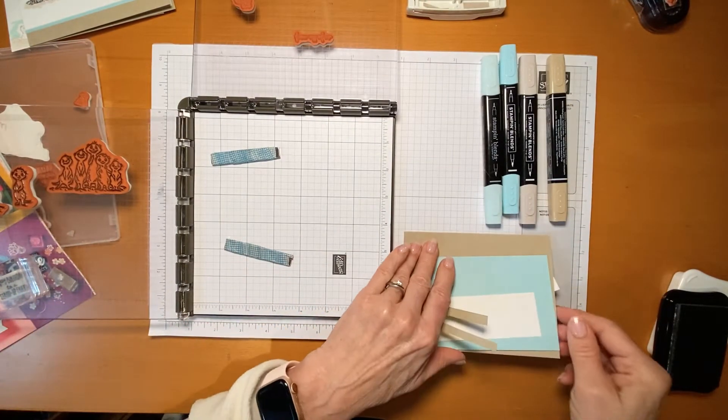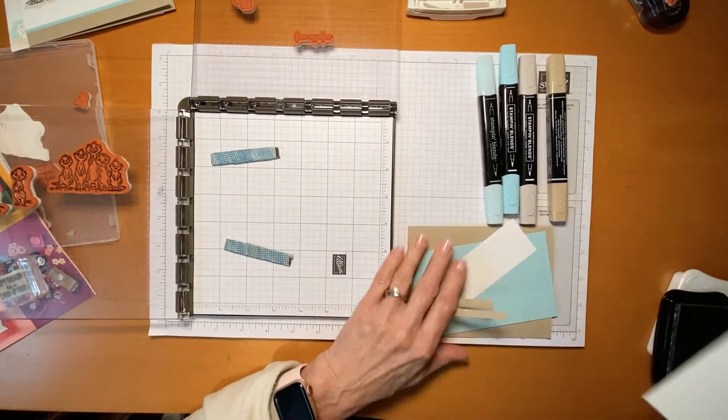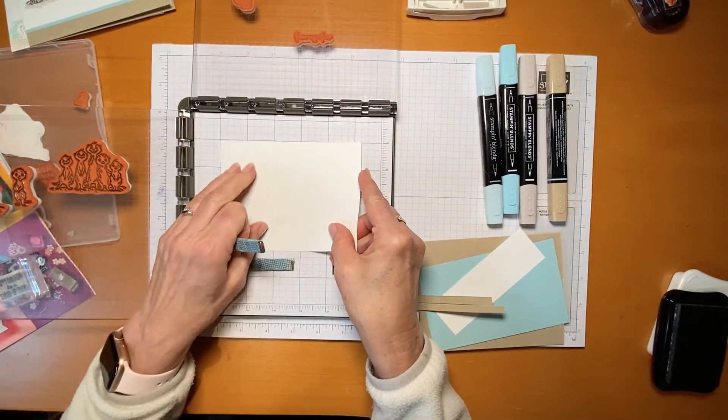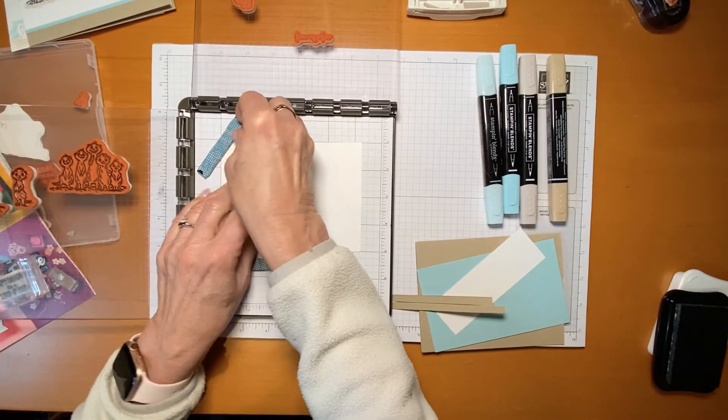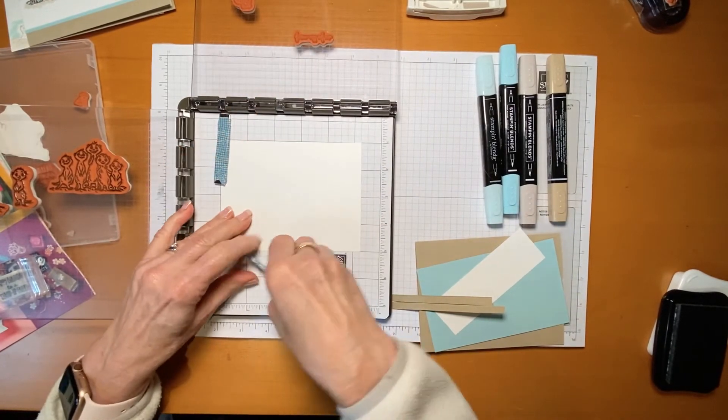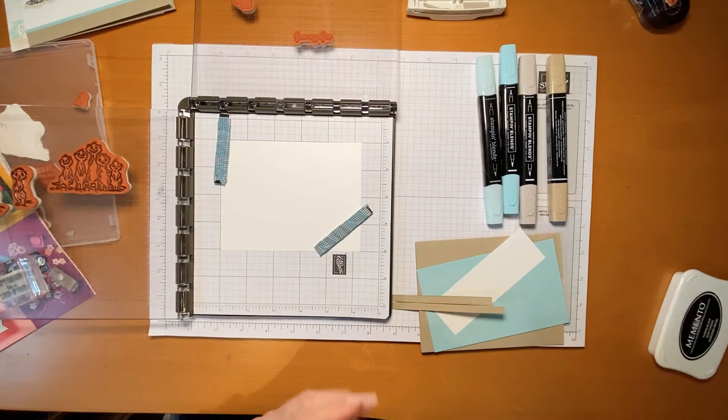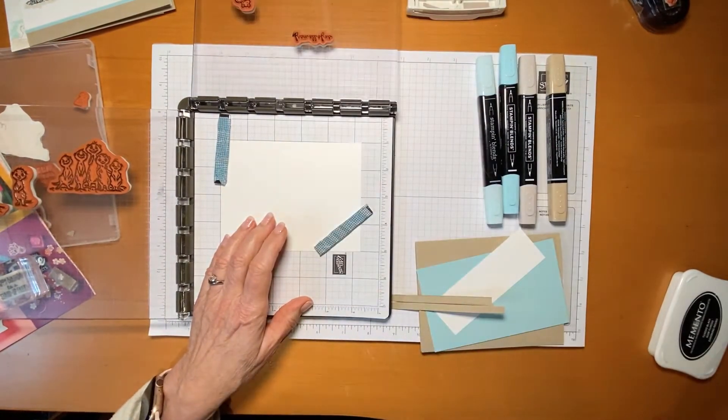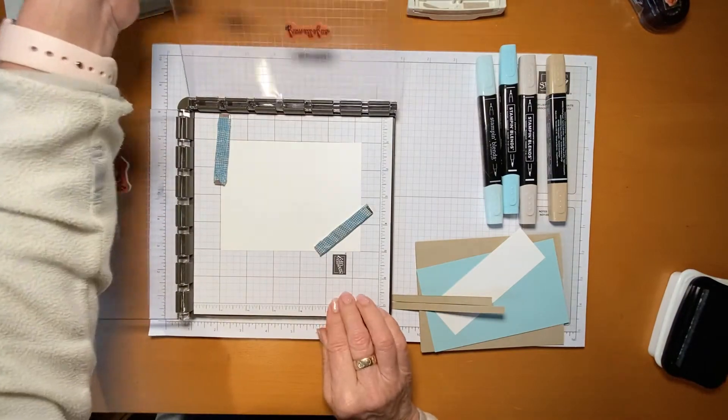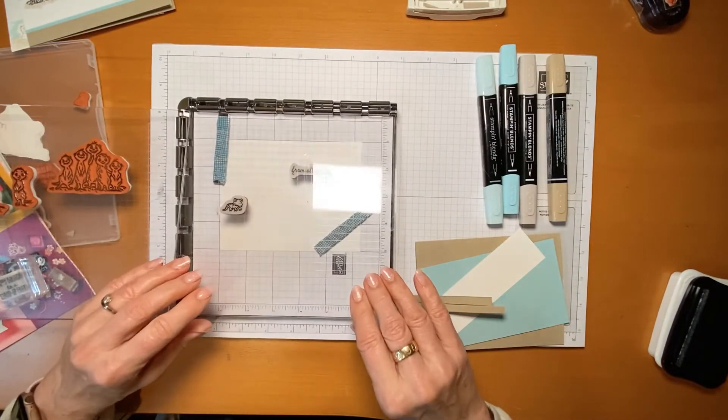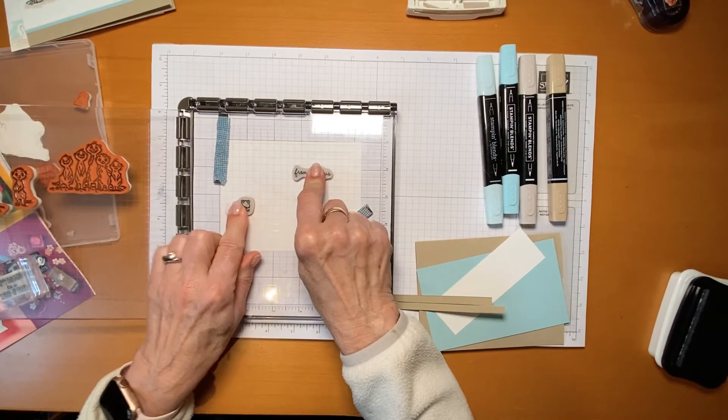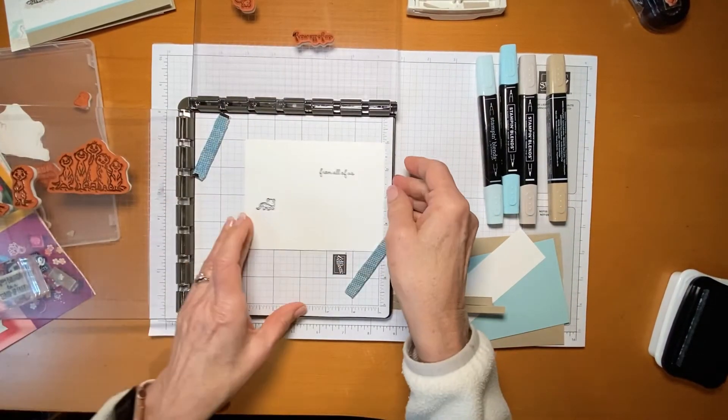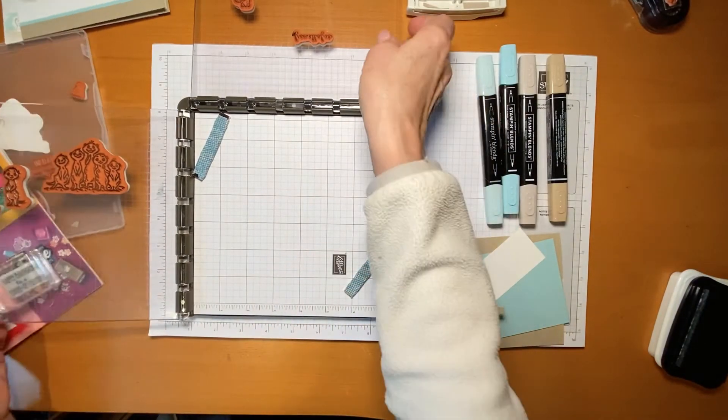And while I've got the Stamparatus out, I will stamp the inside of my card. So I'll just change the setting here, put my new piece of cardstock, ink up my other stamps that I had already placed on the other board. And here we go. Got that done. So we're done with the Stamparatus.